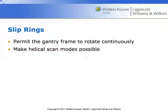First and second generation scanners could only do axial acquisition — they were CAT scans, Computed Axial Tomography. Once we hit the third generation of scanning, we're no longer dealing with CAT scans. That term was abandoned sometime in the 1990s, though people still use it. It's a case of how policy and terminology changes, but people are really slow to pick up on those terminological changes.